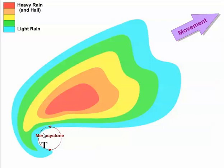Because of vertical wind shear, the precipitation doesn't fall into the updraft, and the storm ends up with separate downdraft regions. Some precipitation wraps around the mesocyclone, forming the hook echo, and if the storm spawns a tornado, it usually forms near the hook echo, near the T on this graphic.